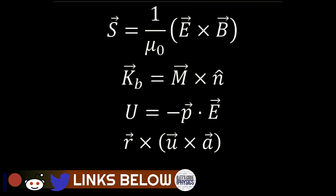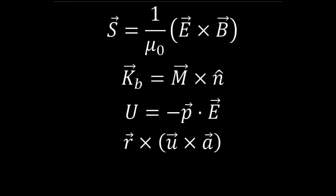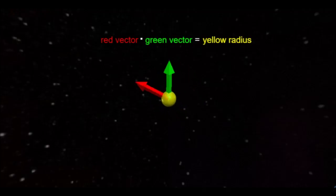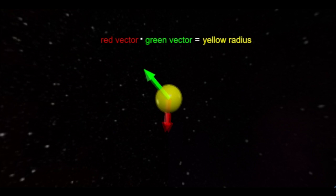Many of the governing equations in physics involve multiplying vectors to produce either a scalar or another vector. When you multiply two vectors to produce a scalar, you're taking the dot product between the two vectors.